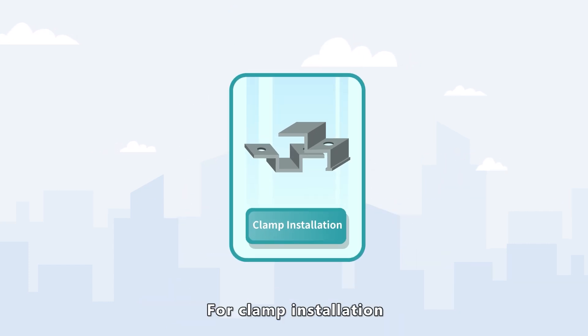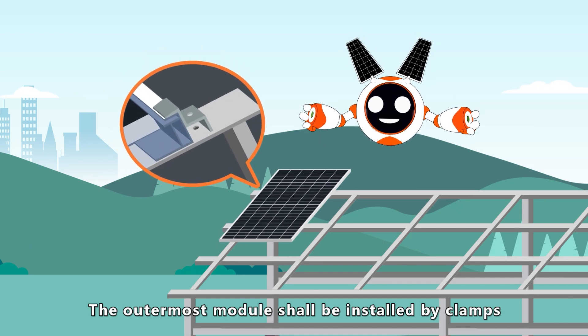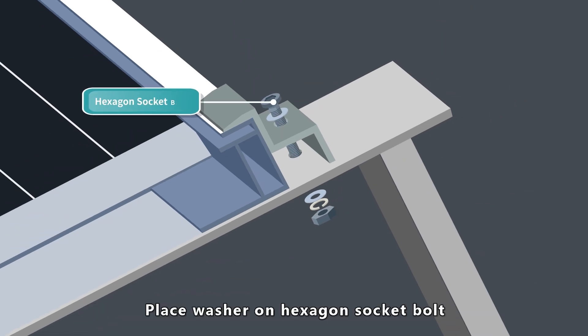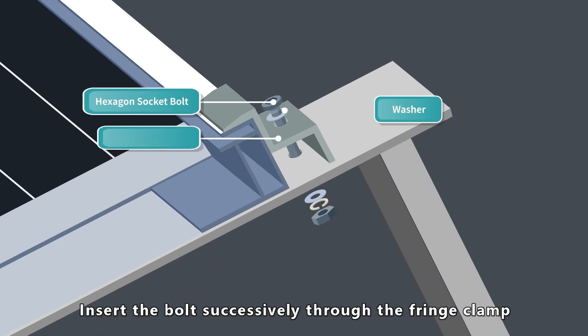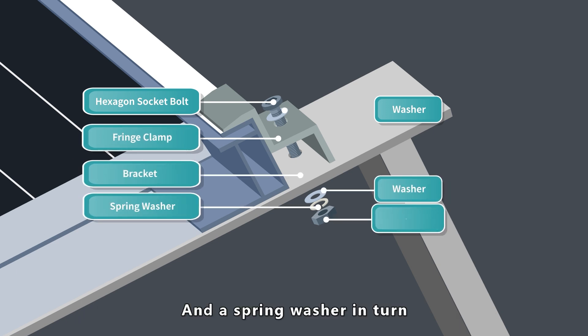For clamp installation, the outermost module shall be installed by clamps. Place washer on hexagon socket bolt. Insert the bolt successively through the fringe clamp, the bracket, a washer, and a spring washer in turn.